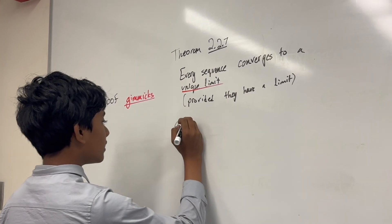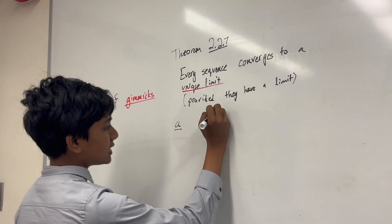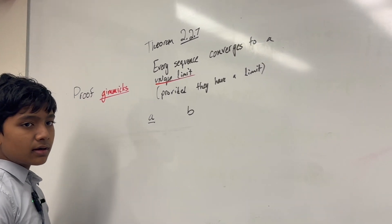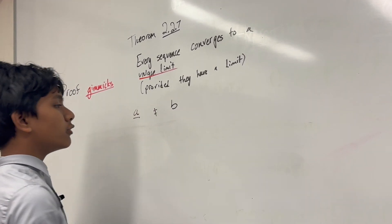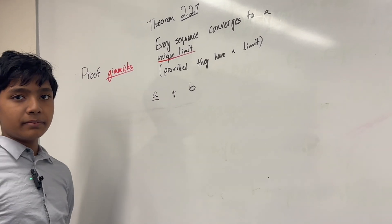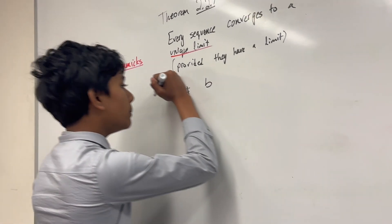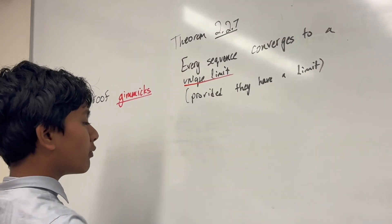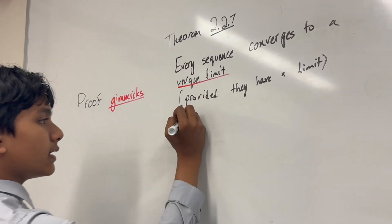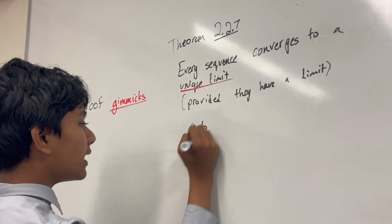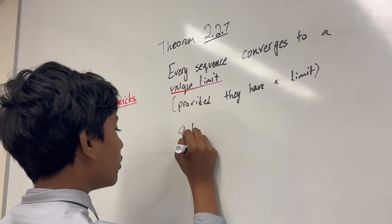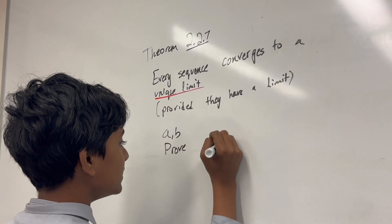So, basically saying the limit is A. Let's say there's another limit, B, that is not equal to A. Prove that B doesn't exist. But, we can actually do it without a proof by contradiction, by just saying the sequence has two limits, A and B. All we have to do is prove A is equal to B.